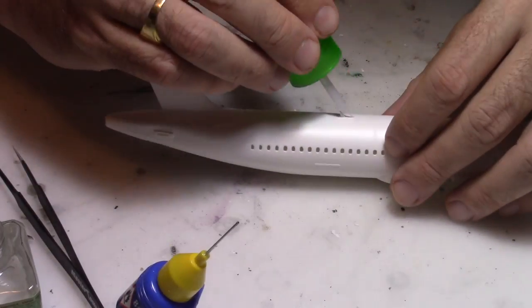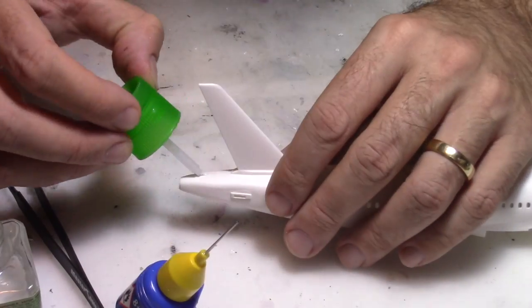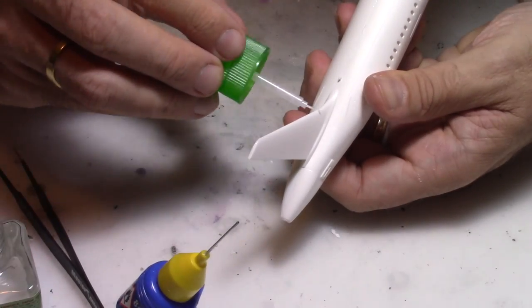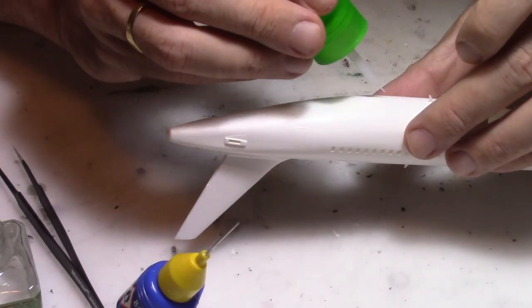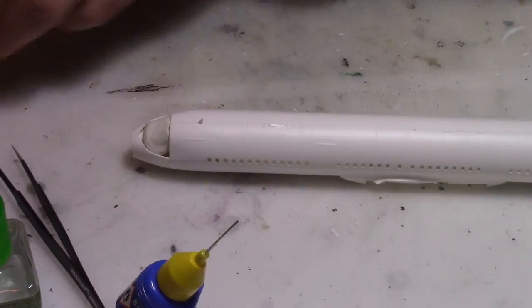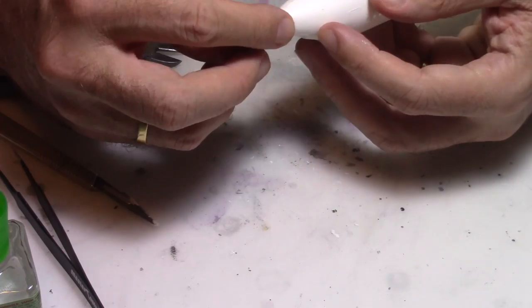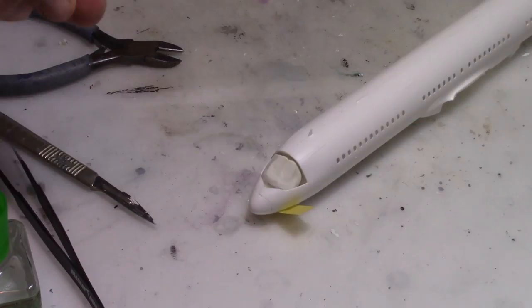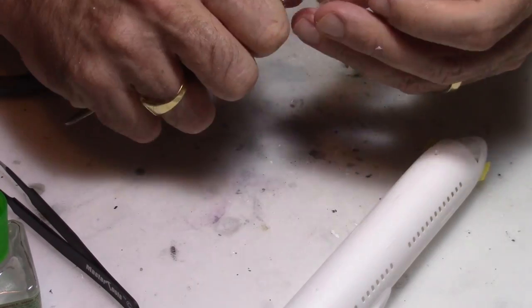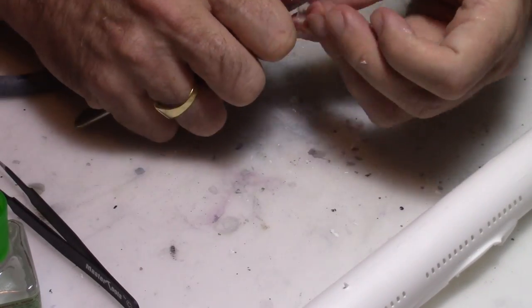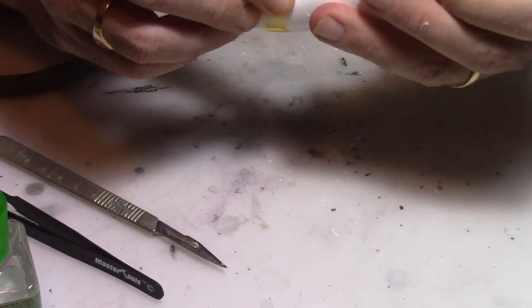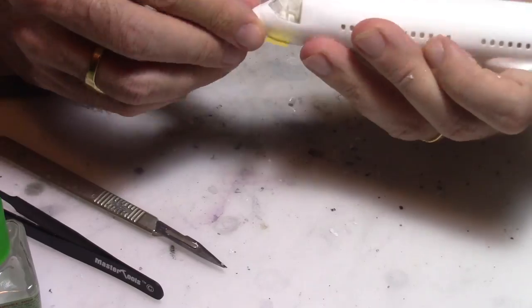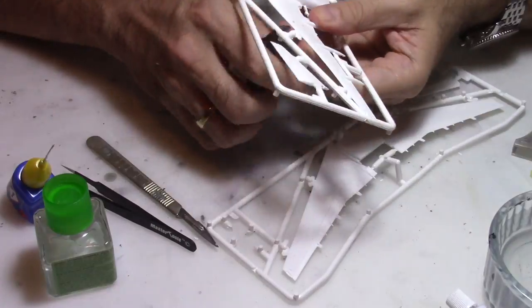After, we're going to start gluing the fuselage together. I'll use very thin Tamiya glue with a brush to go into the little gaps, which gives better bonding for the fuselage. Then I'll put the radome on the airplane, prepare the cockpit windows, and glue them straight onto the fuselage using this thin glue for better bonding.